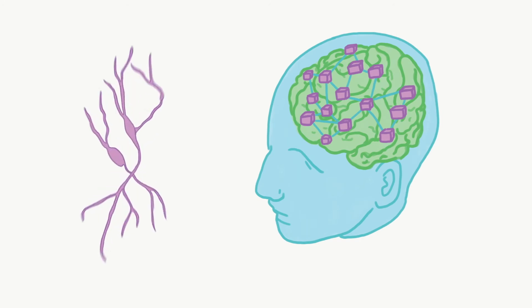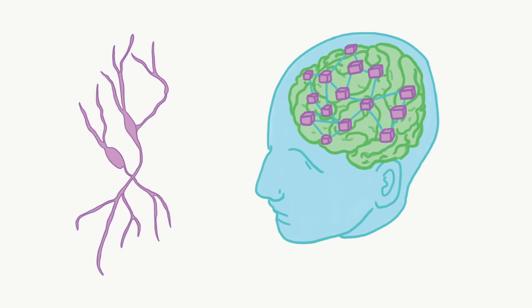TVB Multiscale Co-Simulation is a Python toolbox that enables you to simulate multiscale networks. Multiscale networks simulate both activity on the coarse scale and activity on a finer scale.